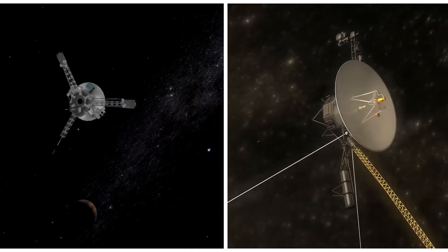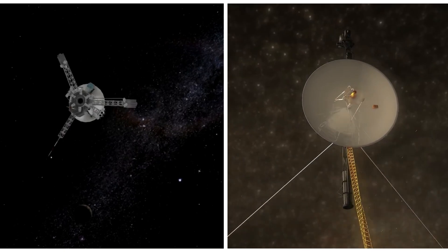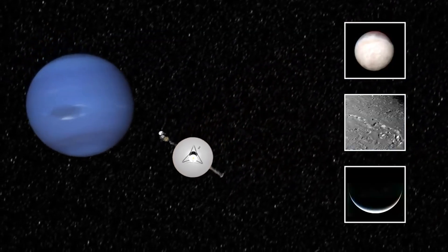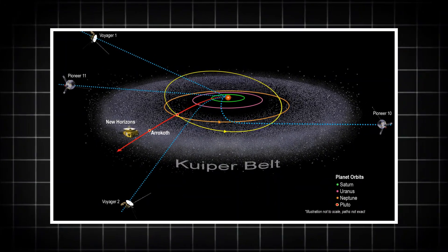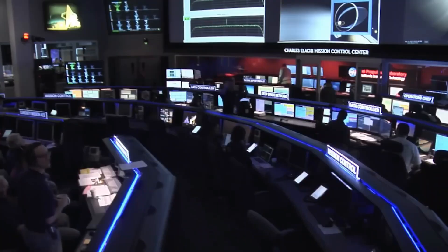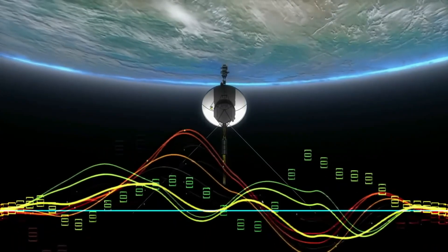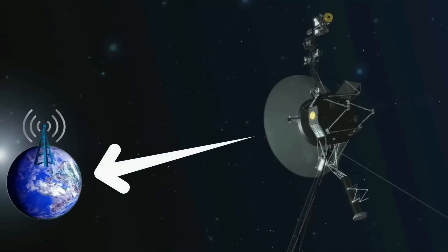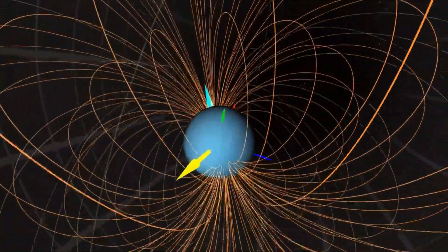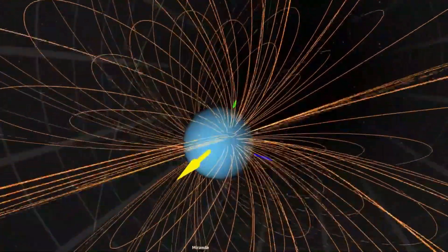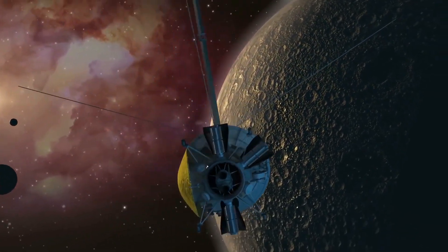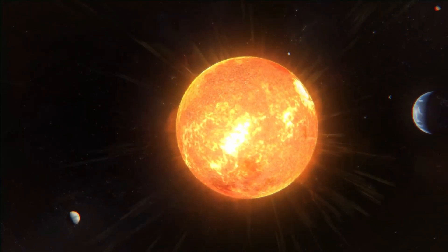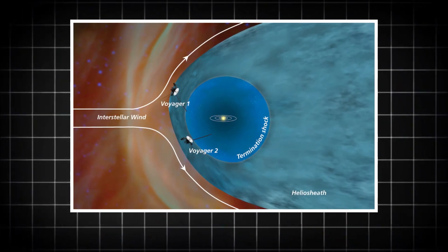But the risks don't end with space exploration. The rise in cosmic rays could also impact Earth-bound technologies. Satellite systems, GPS networks, and communications could all be affected by heightened radiation, leading to disruptions in everything from global communications to military operations. The increased radiation could damage infrastructure and even jeopardize the safety of everyday life on Earth. Imagine a world where the technology we depend on for everything from navigation to weather forecasting suddenly becomes unreliable, all because of this invisible force from deep space.